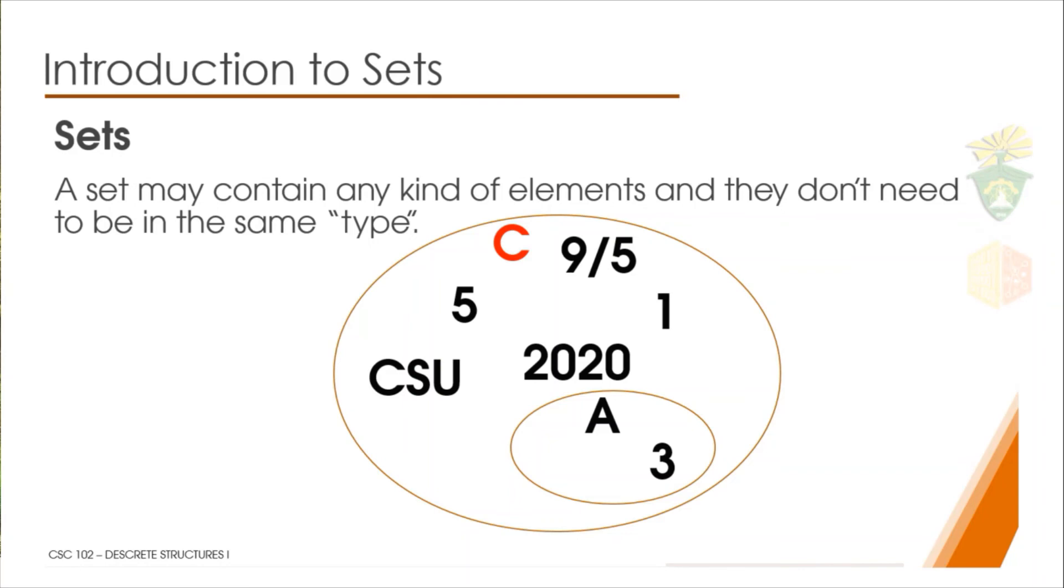The third element type is a fraction. The fourth element type is the school year or the year that we have, 2020. The fifth element type is a school name. And the sixth element is another set, which consists of two elements, A and 3.